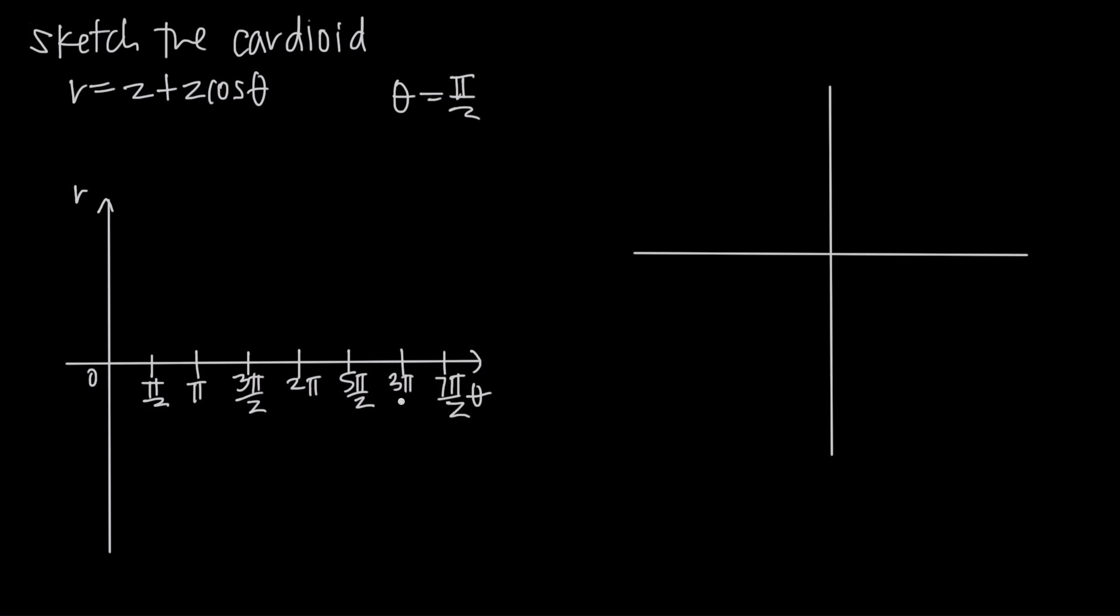Once we've done that, now we want to take all these values that we just wrote down, including 0, and we want to evaluate the original equation at those values. So we'll start by plugging 0 into this equation. Cosine of 0 is 1, 1 times 2 is 2, 2 plus 2 is 4.